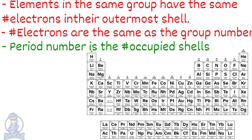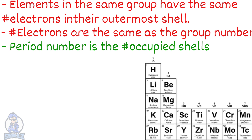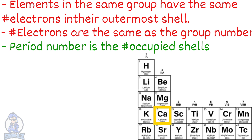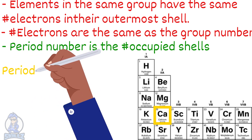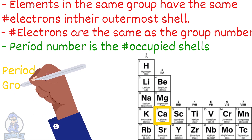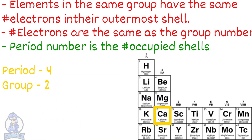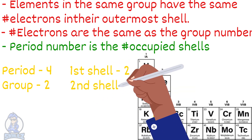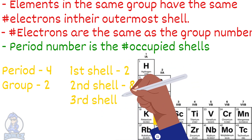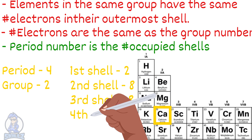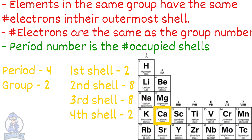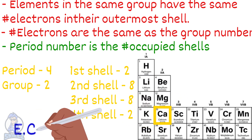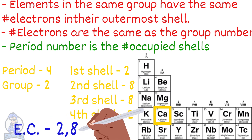Going back to our calcium example: it is in period 4, so it has 4 shells, and it is in group 2, so its 4th shell has only 2 electrons. Since the first shell has a maximum of 2 electrons, the next 2 shells a maximum of 8 each, and the final shell a maximum of 2, the electronic configuration would be 2, 8, 8, 2.